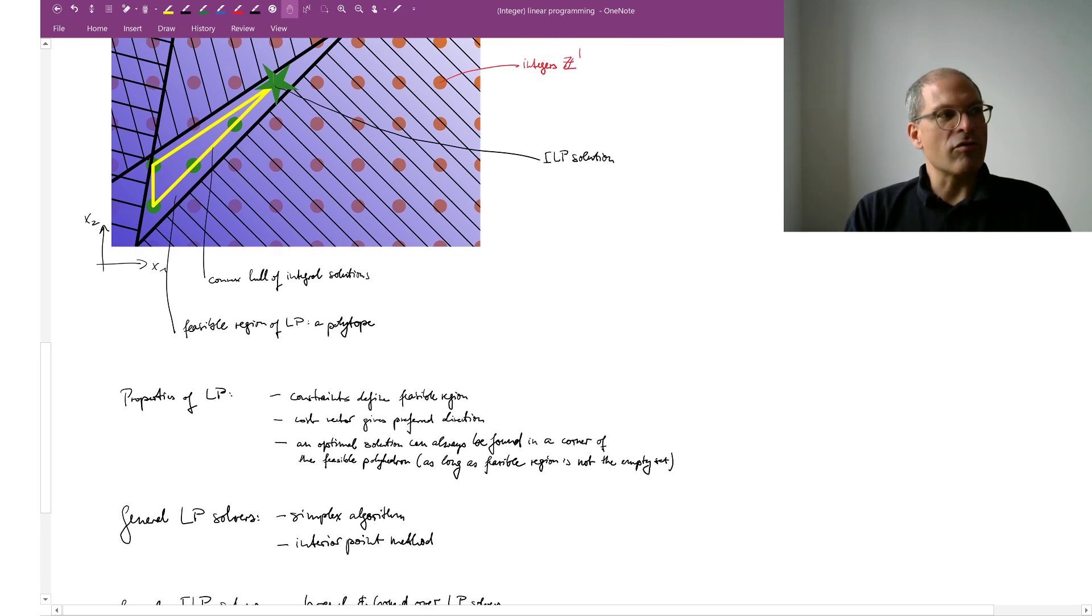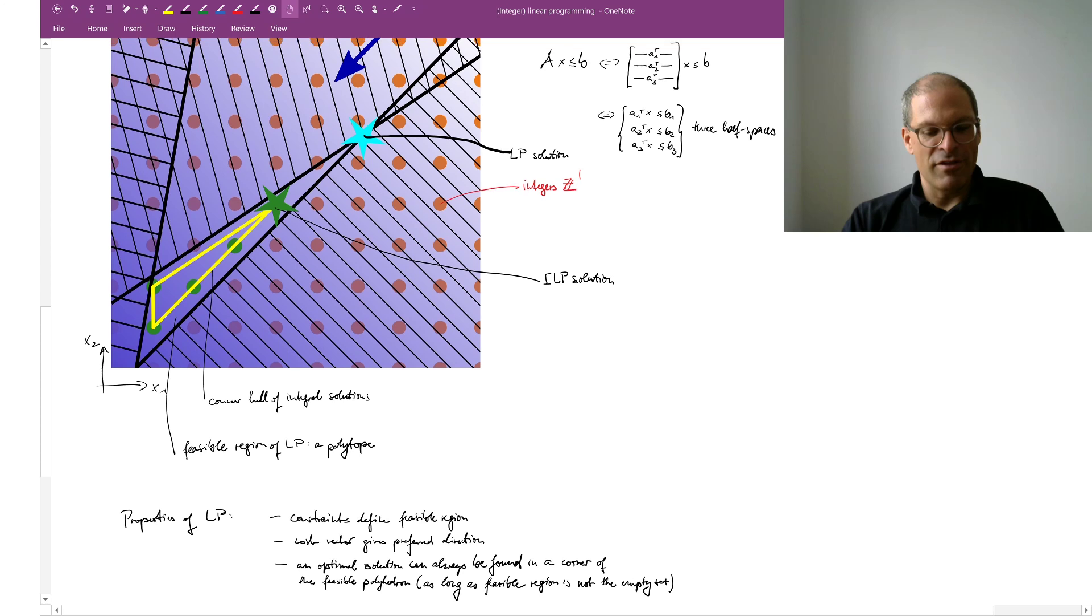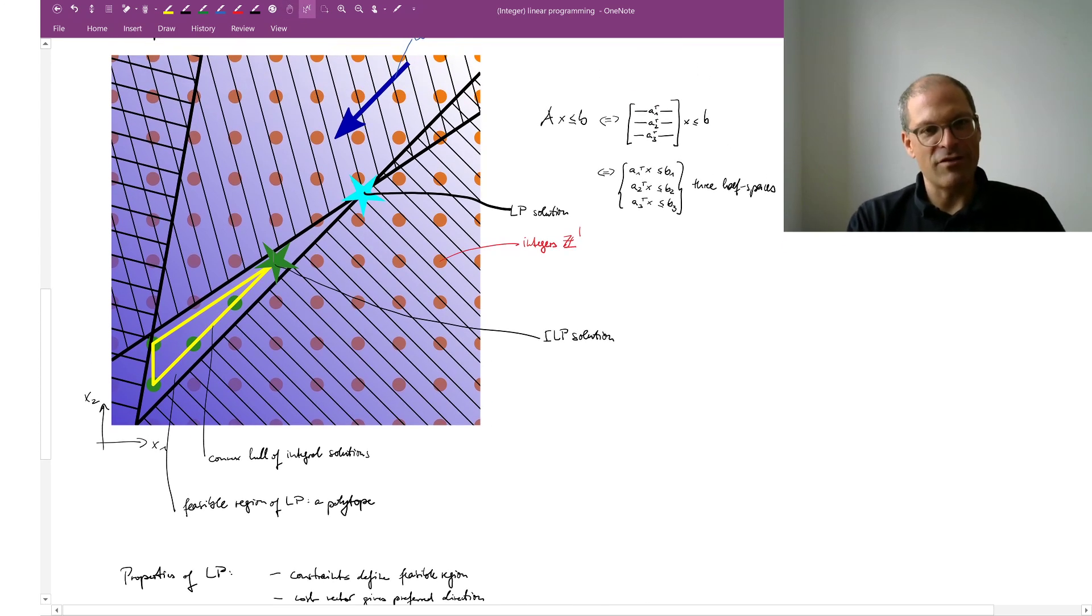What solvers do people use for general linear programs? The most famous algorithms are the simplex algorithm, which starts at one corner of the feasible polyhedron and then walks along edges of the feasible polyhedron until it finds the optimal corner. Or the interior point method, which uses a physical analogy I would say. In the interior point method you pretend that the cost vector, that's like an electrostatic potential which increases linearly in a particular direction.